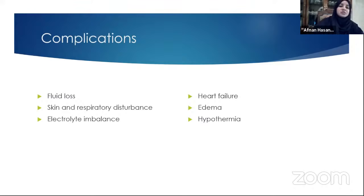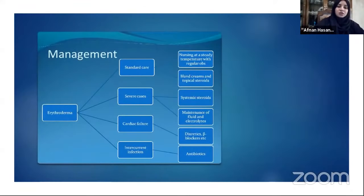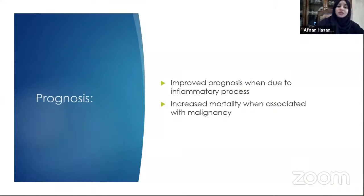Treatment: first, treat the underlying cause. Erythroderma requires immediate treatment because it causes fluid loss, skin and respiratory disturbance, electrolyte imbalance, heart failure, edema, and hypothermia. The patient needs admission, systemic steroids, topical emollients and steroids, maintenance of fluid and electrolyte balance, antibiotics for sepsis, and management of cardiac failure with diuretics and beta-blockers. Prognosis is good for inflammatory causes; mortality is higher when associated with underlying malignancy such as CTCL. Treatment depends on the underlying cause — for erythrodermic psoriasis, cyclosporine is crisis therapy; for severe eczema, cyclosporine or methylpred can be used.